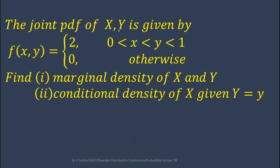The next question: the joint PDF of (x, y) is given by f(x, y) = 2 when 0 < x < y < 1, and f(x, y) = 0 otherwise. You have to find the marginal density of x and y, and the conditional density of x given y equals y.